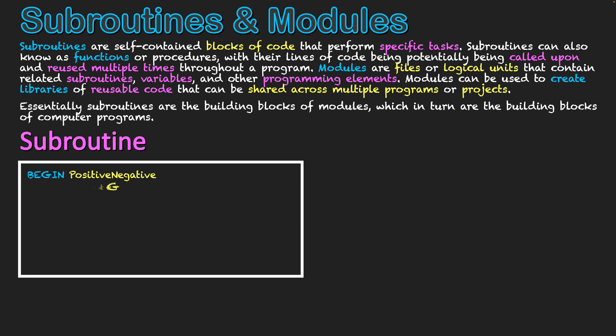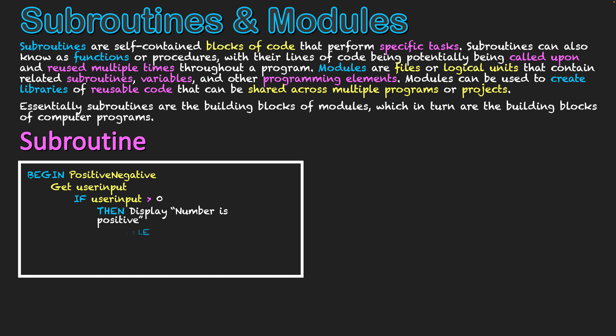I'm going to make a program called positive negative. It's going to get user input, and if the user input is greater than zero, we know the number is positive. If it's not greater than zero, we know the number is negative. There are some logic errors here — for example, what happens if it is zero — but we're not going to go into that detail right now.